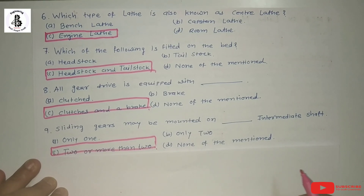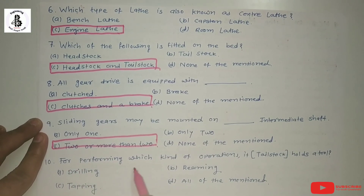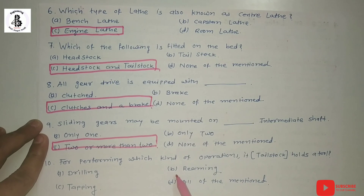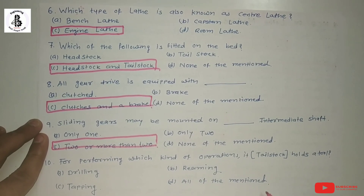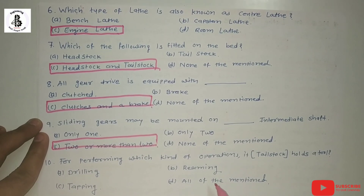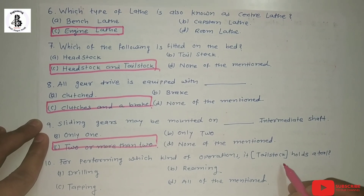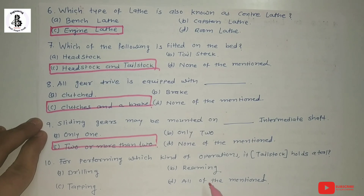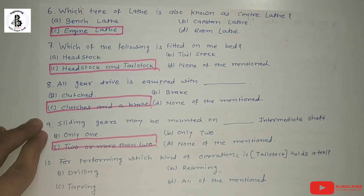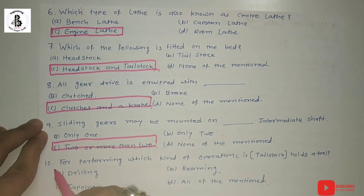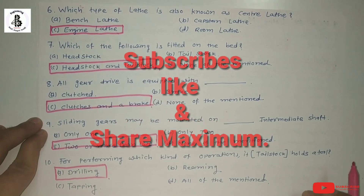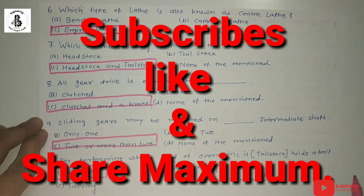The next question: for performing which kind of operations does the tailstock hold the tool? Option A: drilling. Option B: reaming. Option C: tapping. Option D: all of the above. When you hold the drill bit in the tailstock and the workpiece is in the chuck, the chuck rotates and the drill bit fitted in the tailstock is fed towards the rotating workpiece to carry out drilling operations. So the right answer is A: drilling. If you like this, then subscribe and share more mechanical engineering tutorials. Thank you very much.